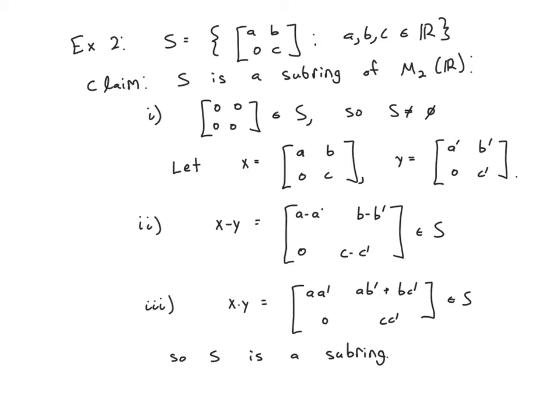Now let's look at a second example of a subring. This one actually is in the book. S is the upper triangular 2x2 matrices. Claim S is a subring of M2(R). Again, we're going to use the subring criterion. So first, let's show it's not empty. The zero matrix is in this set. So it's definitely not empty.